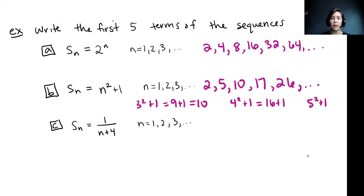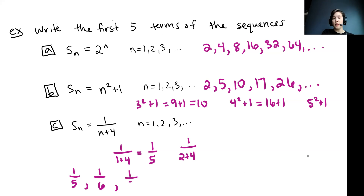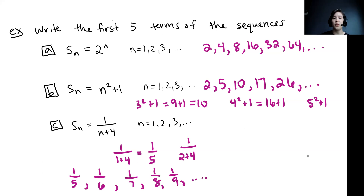Now our last sequence: Sn equals 1 over (n plus 4). Plugging in n equals 1, we get 1 over (1 plus 4), which is one-fifth. The next term is 1 over (2 plus 4), giving us one-sixth. Then 1 over (3 plus 4) gives one-seventh, then one-eighth, then one-ninth, and so on. Those are the first few terms of our three sequences.